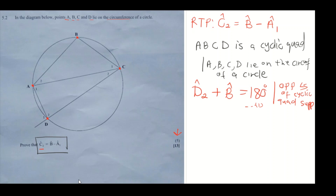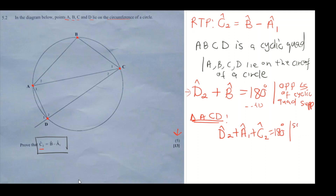Now we're going to look at triangle ACD. In triangle ACD you can see angle D2, angle A1, and angle C2. So we can say angle D2 plus angle A1 plus angle C2 equals 180 degrees. The reason is the sum of interior angles of a triangle. If you add up all the angles of this triangle, they give you 180 degrees.